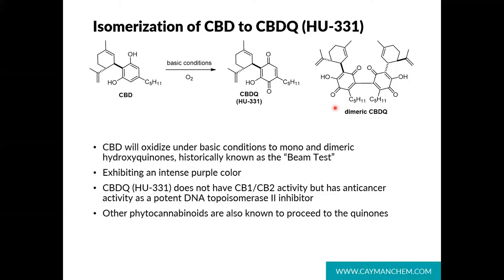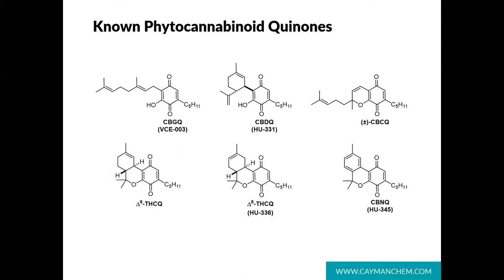While the Beam test has previously been used as a forensics technique to detect marijuana, it is now known that THC does not provide a positive result under the test conditions. Activation of the resorcinol ring structure and subsequent oxidation requires both free hydroxyl groups. Other quinones of the phytocannabinoids are also known to exist. Quinones of the major phytocannabinoids have all been reported as highly colored species. Like CBDQ, these phytocannabinoid quinones have been shown to have activity in PPAR gamma assays, and have similar stability issues with activity dropping off with the formation of dimeric species. The highly colored nature of the phytocannabinoid quinones could explain some of the color changes observed in isolated cannabis extracts.